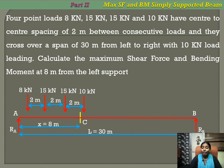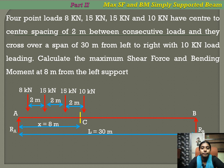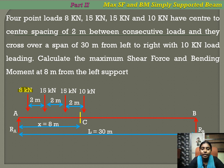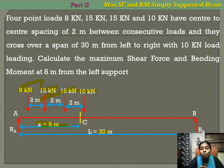Our aim is to find maximum negative shear force, maximum positive shear force, and maximum bending moment — and bending moment is always positive. We have four loads: 8 kilonewton, 15 kilonewton, 15 kilonewton, and 10 kilonewton. The distances between these loads are 2 meters. The total length of the span is 30 meters and the section is taken at a distance of 8 meters.